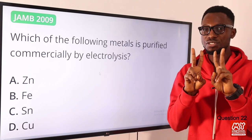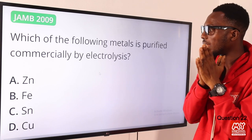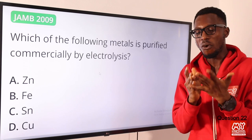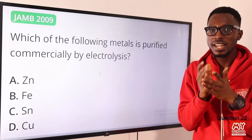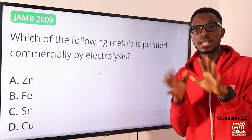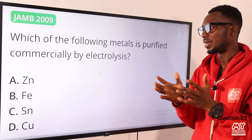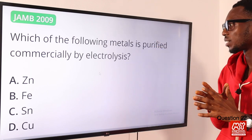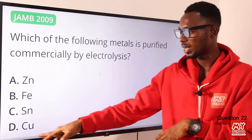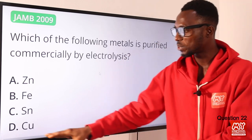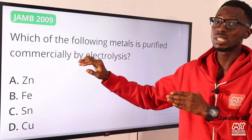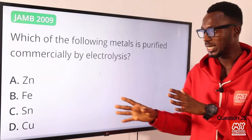Question 22: which of the following metals is purified commercially by electrolysis? Uses of electrolysis include purification of metals like copper, mercury, silver, and gold, as well as extraction of metals and electroplating. Impure copper obtained from ore undergoes electrolysis to produce pure copper. So the correct option is option D for copper (Cu).